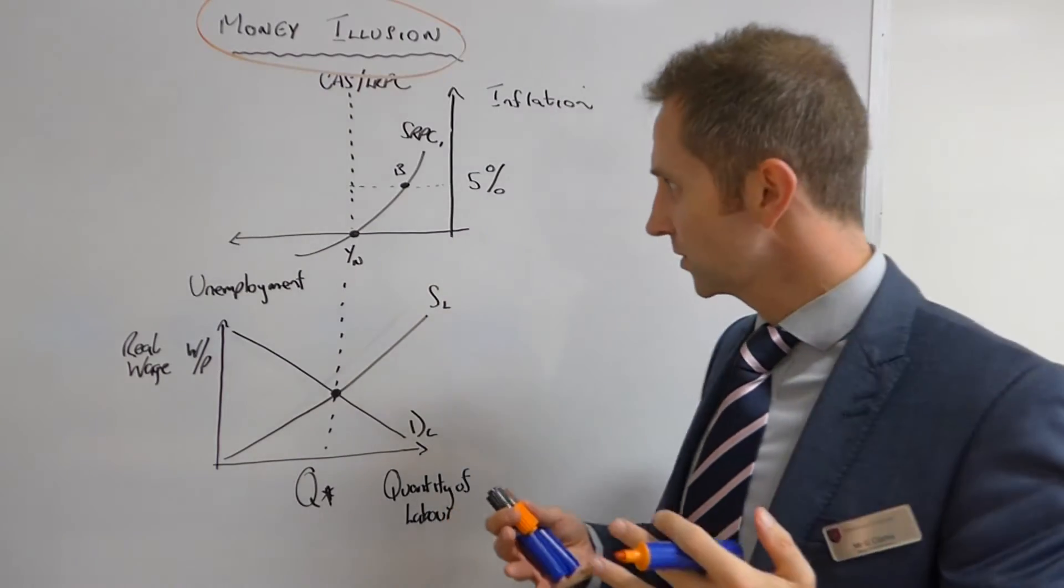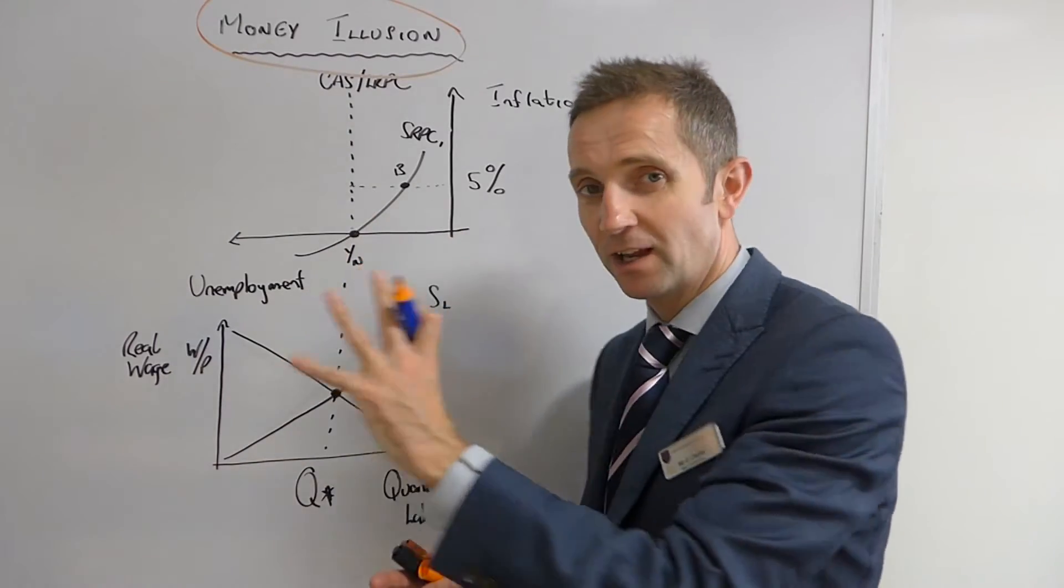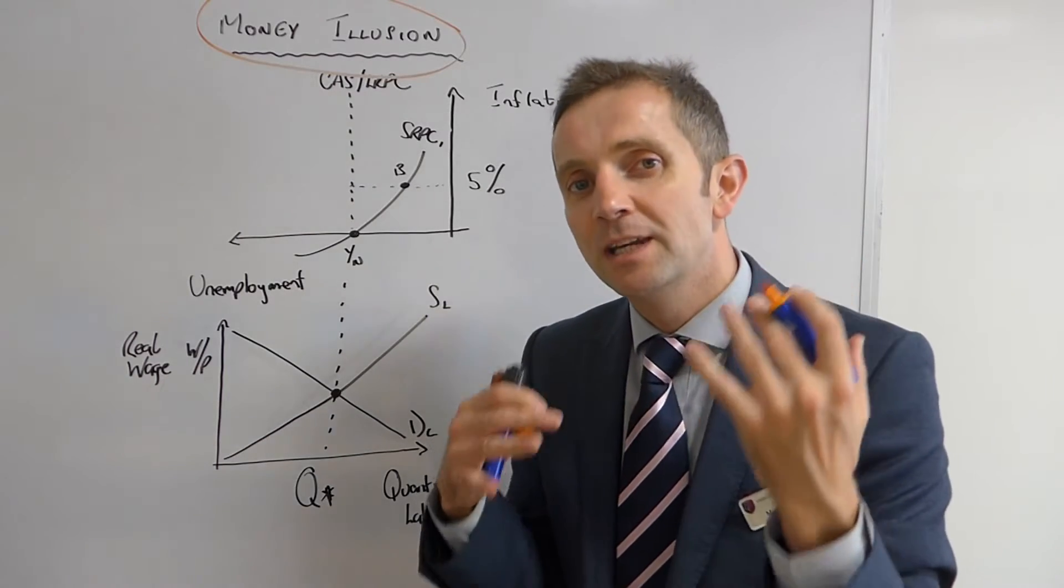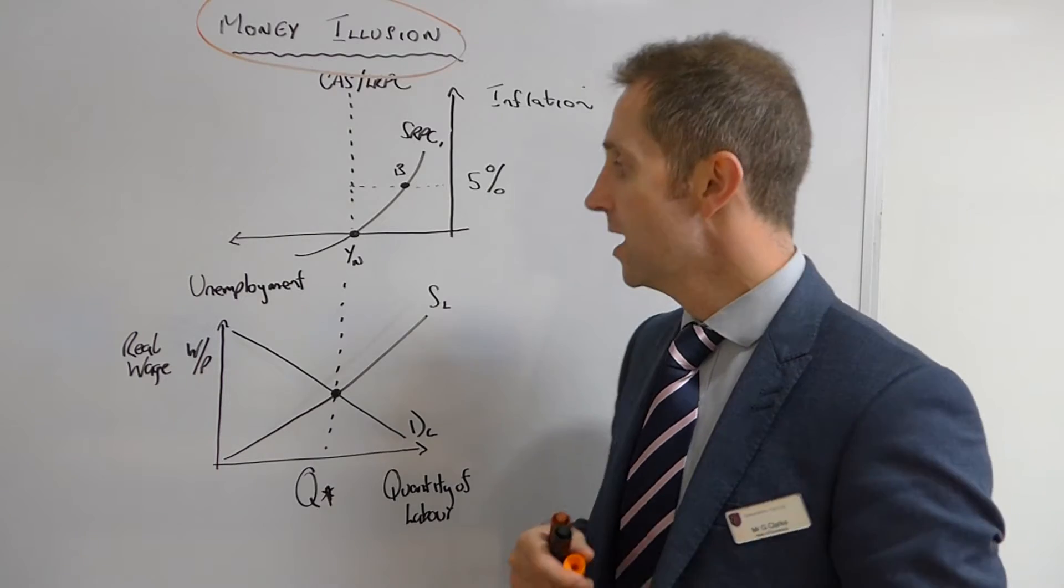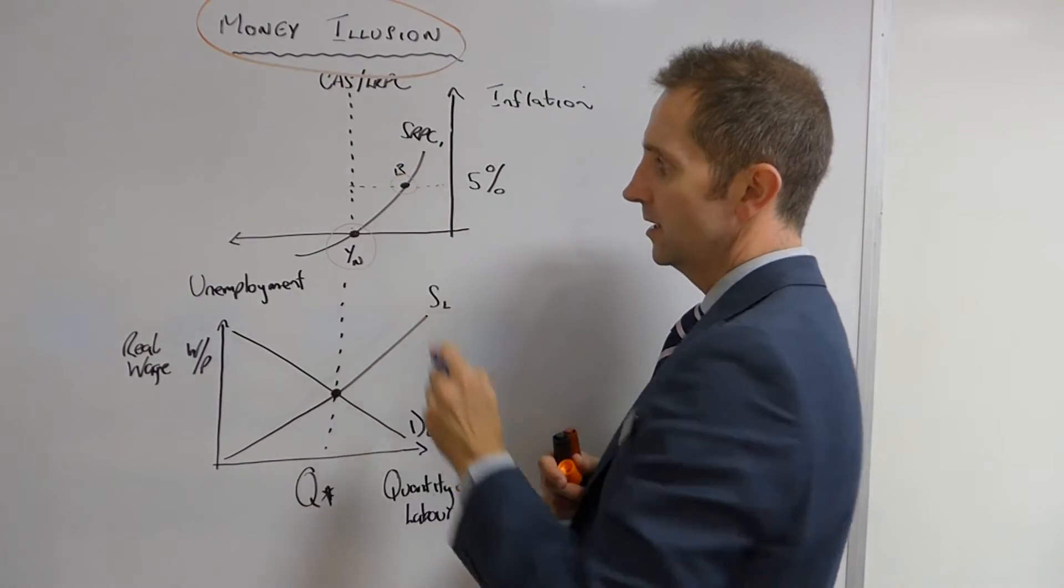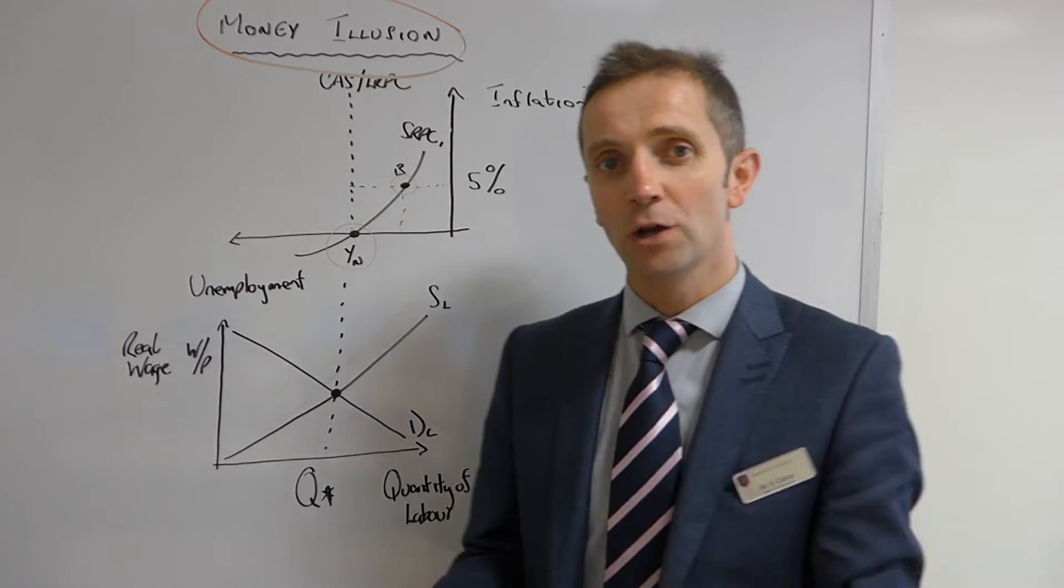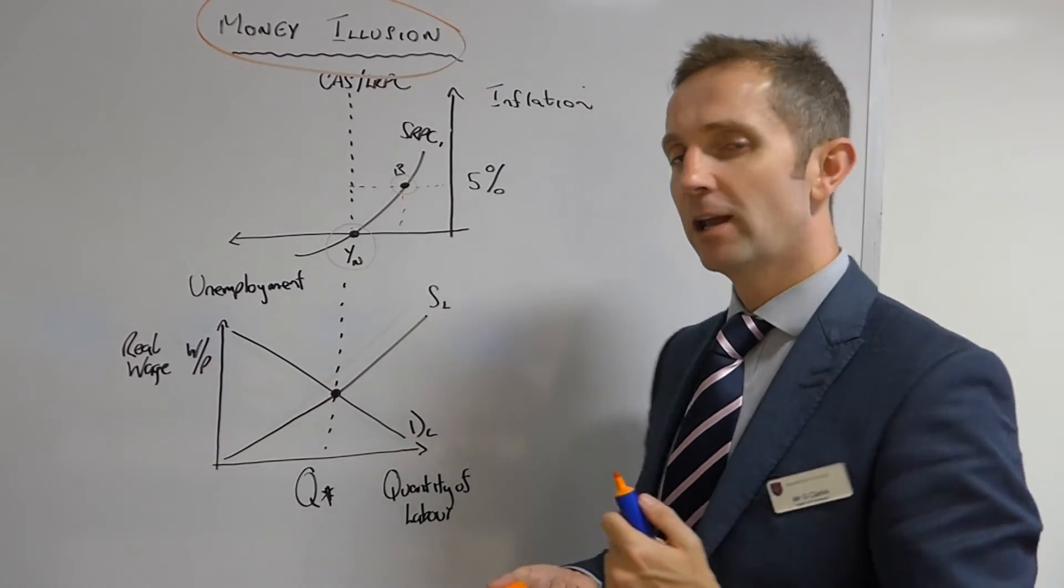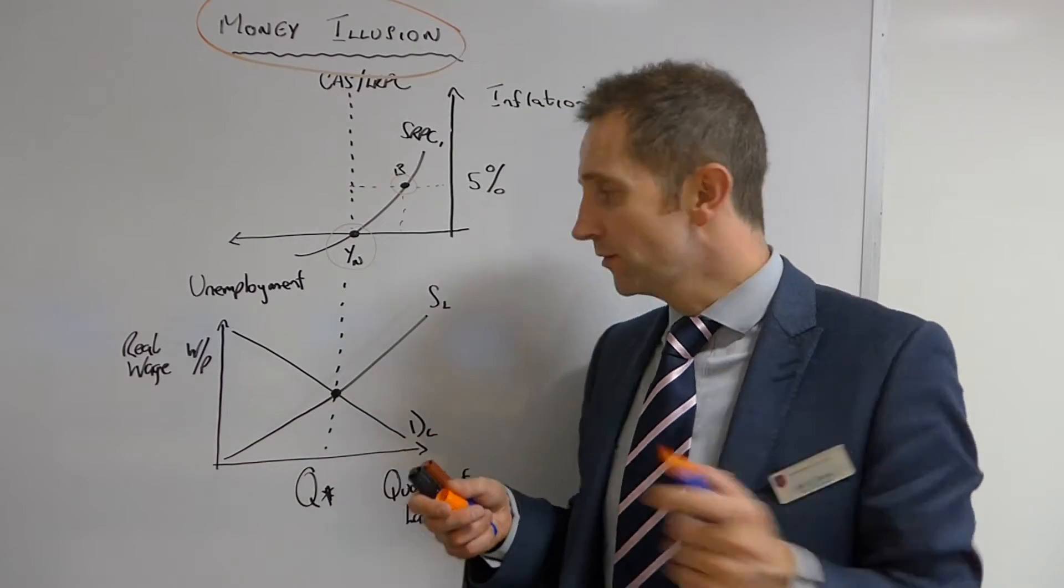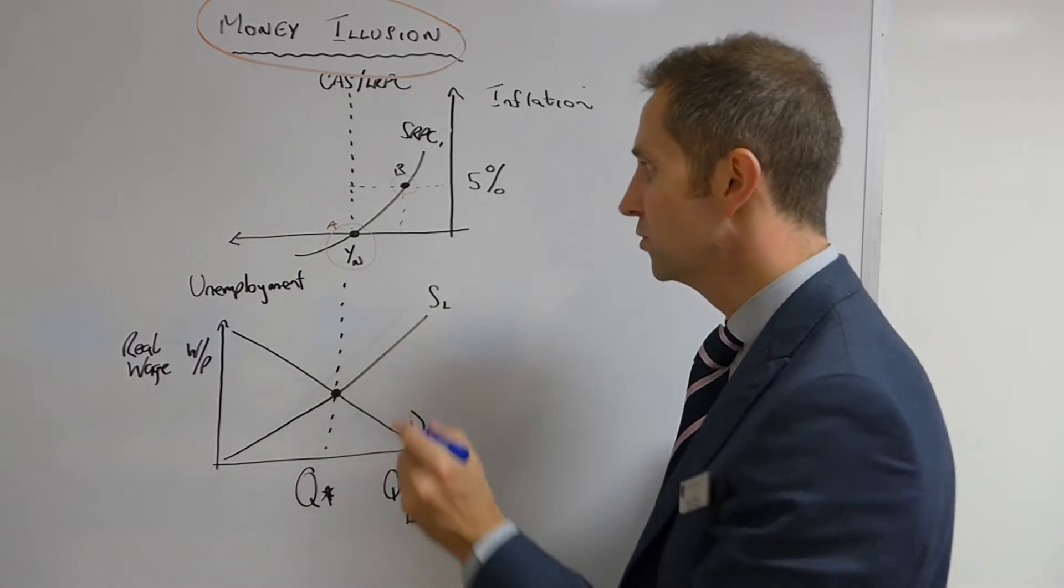Money illusion is of course the primary reason why we end up, certainly in the case of the classical economic scenario, being able to move for a short period of time away from the natural rate of unemployment level of output YN to the level shown by point B here. This movement from A to B, so if we say this is A at the natural rate, this movement from A to B as we've said,